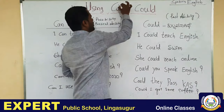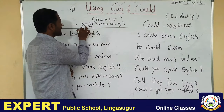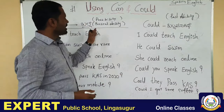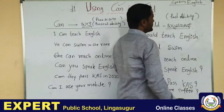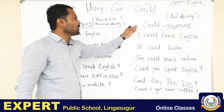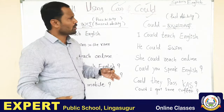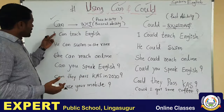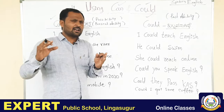Okay, so when do we use 'can'? 'Can' means ability — you are able to do something. 'Could' means you were able to do something in the past. So 'can' is used for present ability and 'could' is used for past ability.